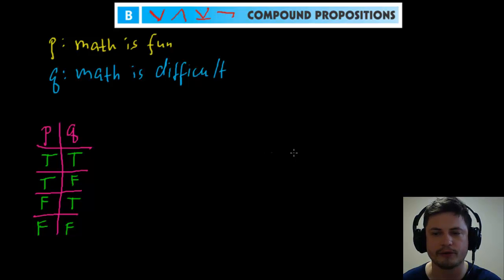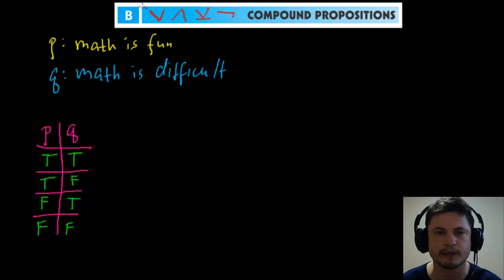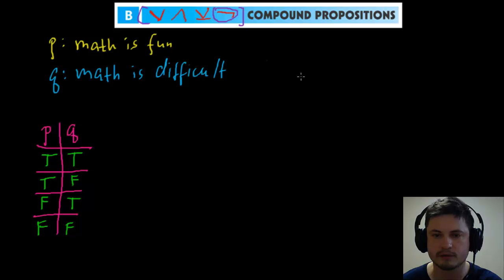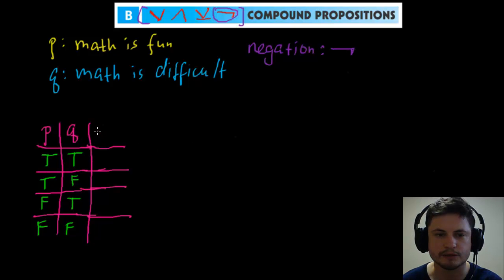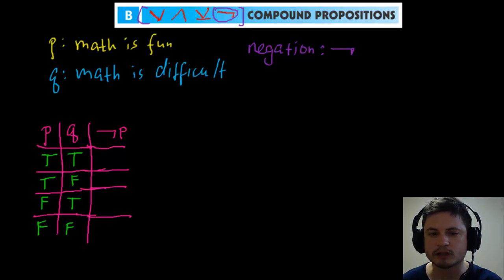This is our truth table for two propositions. If you look at your formula booklet you'll also find these four characters. Let's start with the one we did last video — negation. We're going to add a negation column, doing only not p.